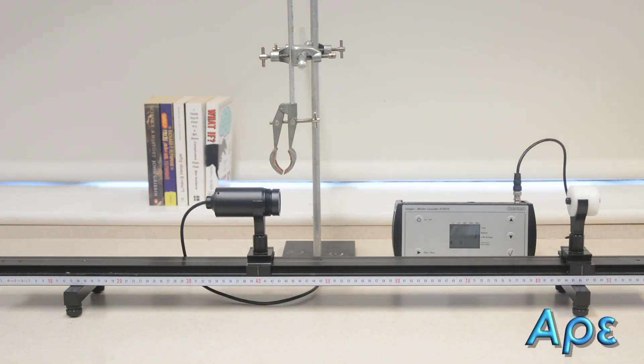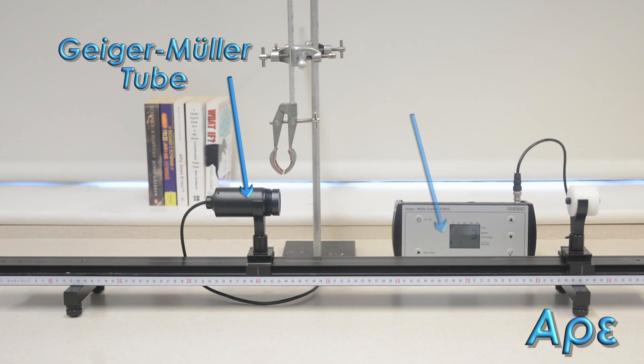Here we can see the arrangements for the gamma ray experiment. On the left hand side we have a Geiger-Müller tube which is connected to a counter which can be seen in the background.